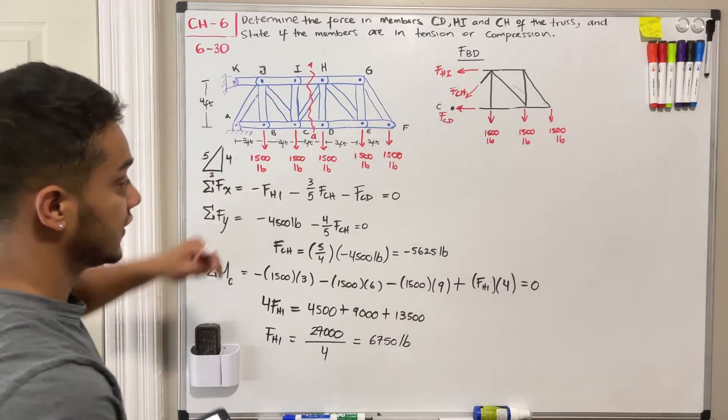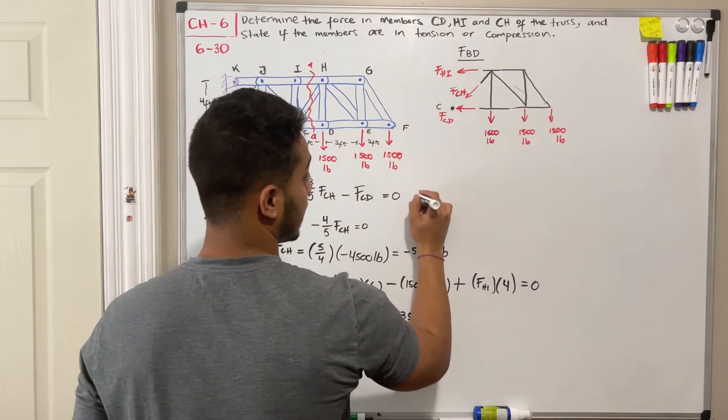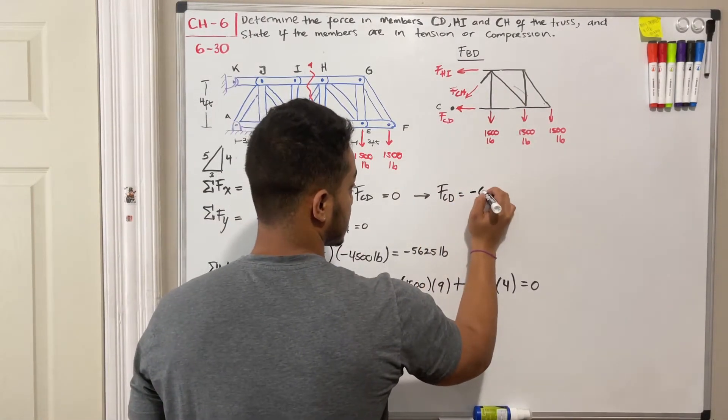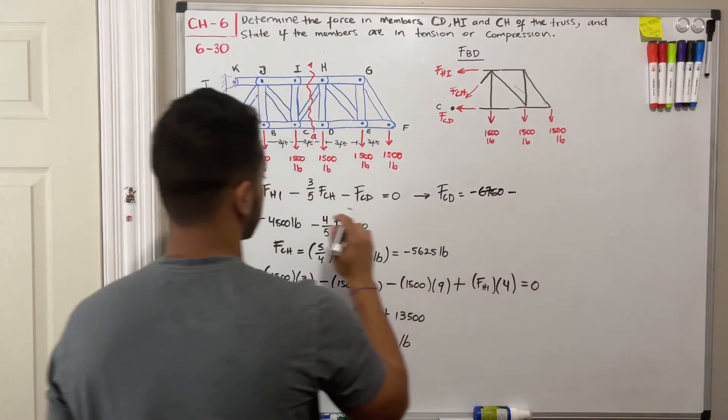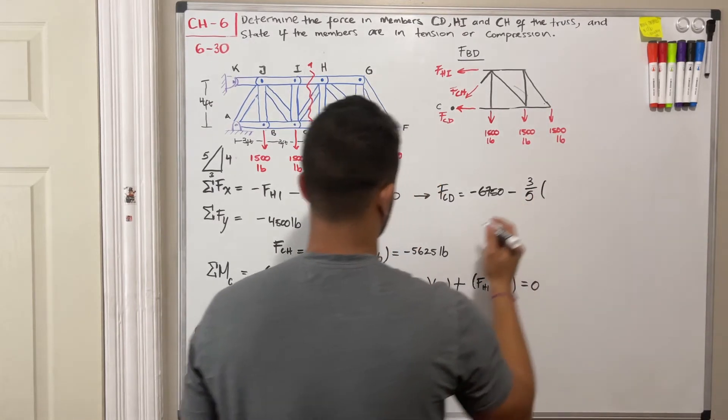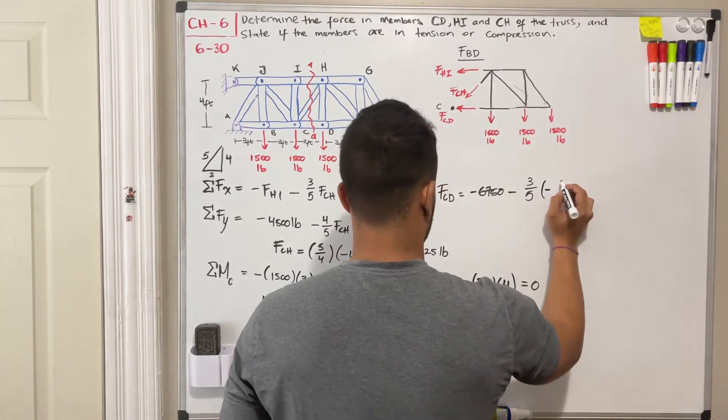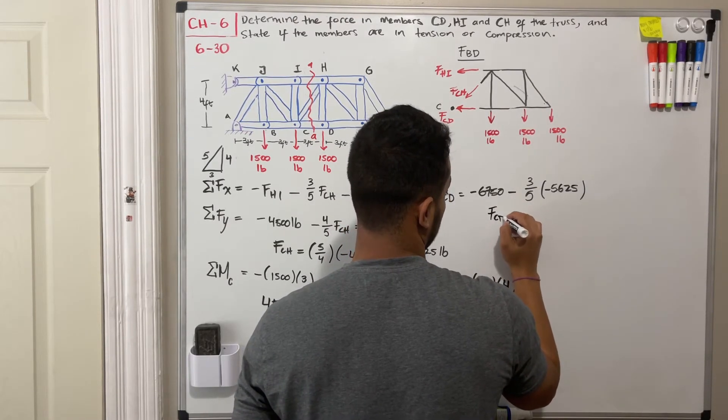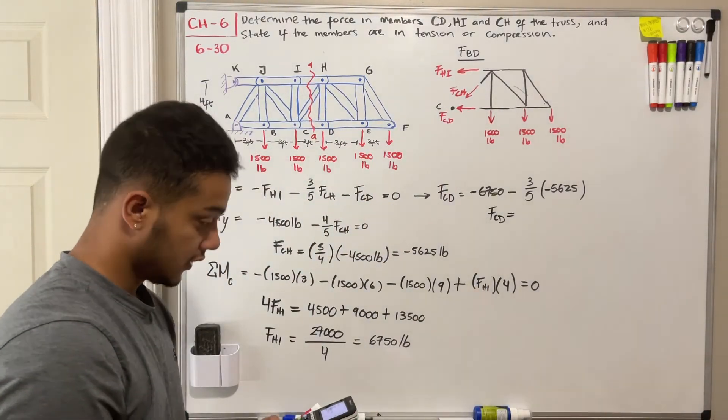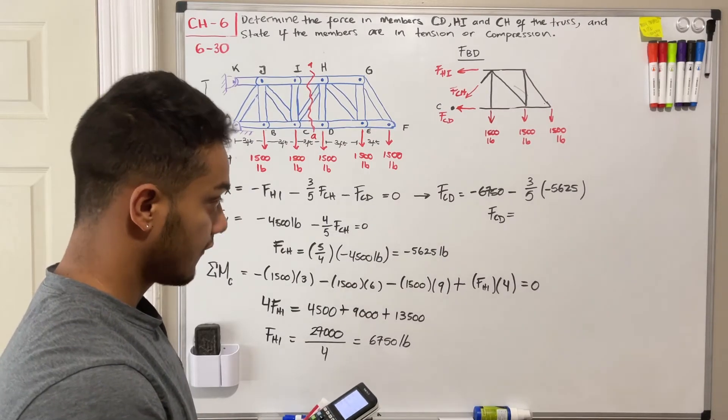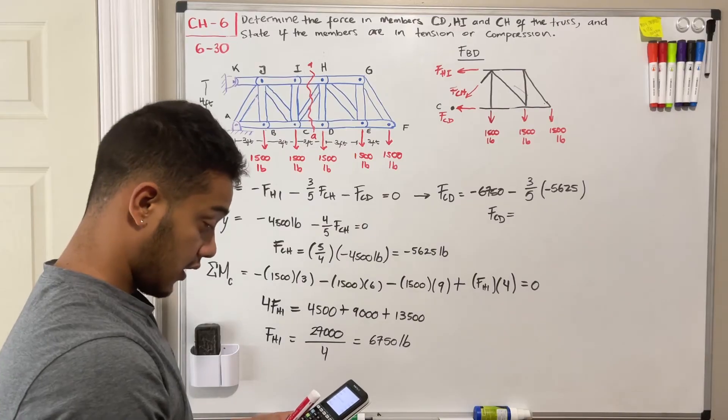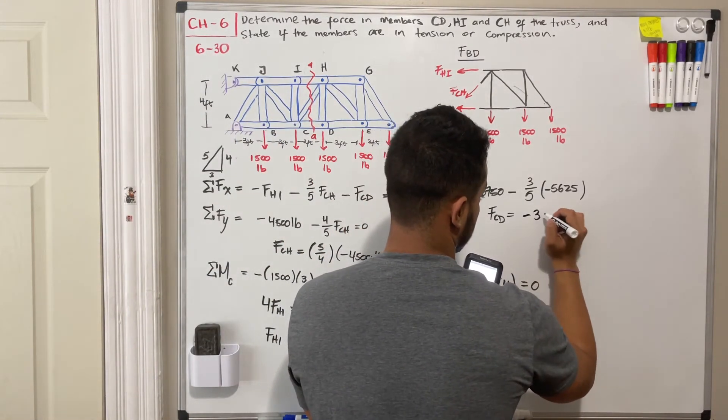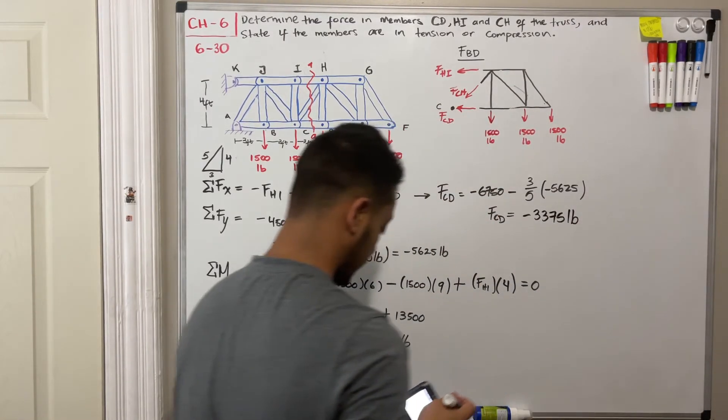All we need is to solve for FCD in here. So I'm going to pass FCD to the other side. Therefore, FCD should be equal to the negative of these two guys. So it will be negative 6750 minus 3 fifths of FCH, which is negative 5625. And what is this equal to? So FCD is equal to, so we plug this in the calculator. So we get negative 6750 minus 3 over 5 multiplied by negative 5625. And this will give me negative 3375 pounds.